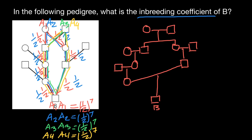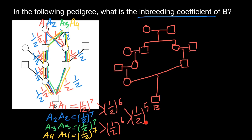In order to calculate the joint probability — because if person B has two identical alleles, it can be any of these four variants — we have to add all these probabilities. Adding two probabilities gives one half to the power of six, and adding the other two also gives one half to the power of six. Adding those results together gives one half to the power of five. One half times one half times one half times one half times one half equals one over 32. This is our final answer.